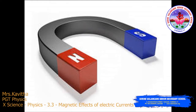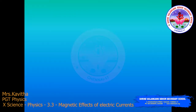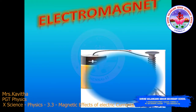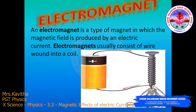Hello children, welcome to our class. Now the continuation of magnetic effects of electric current — in that we are going to learn about the electromagnet, which is nothing but a type of magnet in which the magnetic field is produced by an electric current.